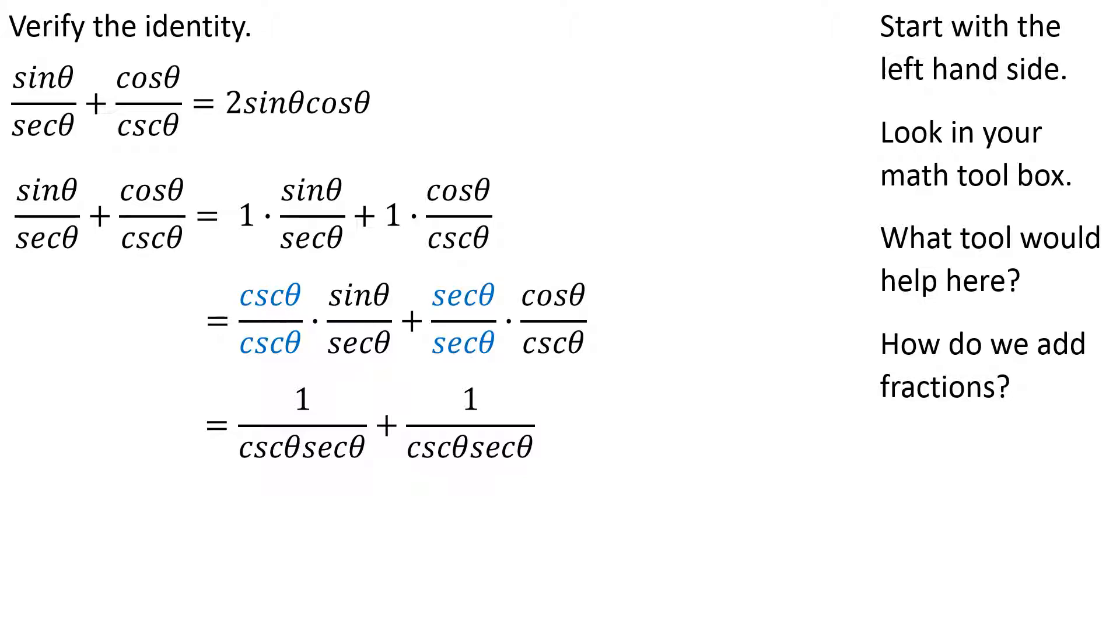Of course in that first fraction, cosecant theta and sine theta are reciprocals, so if I multiply those together I get one. On the second fraction, secant theta and cosine theta, those are reciprocals, if I multiply those together I get one. So now when I add these fractions, one plus one makes two. Of course, cscθ is just the reciprocal of sinθ, secθ is just the reciprocal of cosθ, and there we have it.